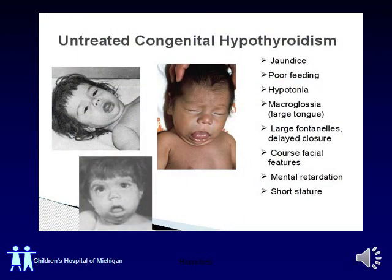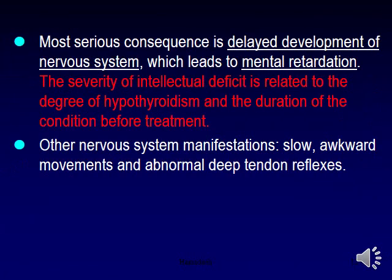Untreated congenital hypothyroidism is also associated with jaundice, poor feeding, hypotonia, short sutures, and umbilical hernia. The most serious consequence of hypothyroidism is delayed development of the nervous system, leading to mental retardation.